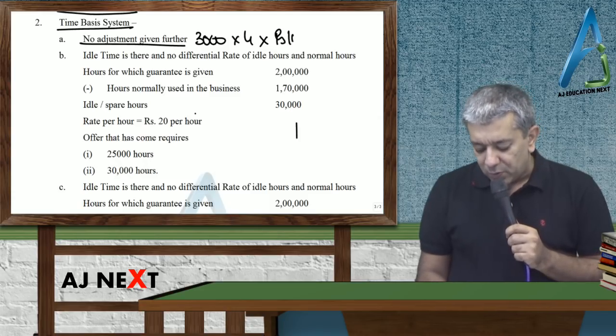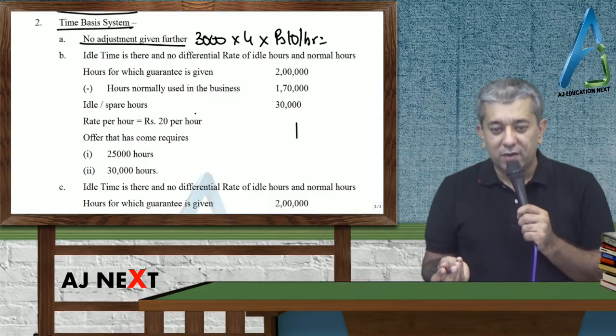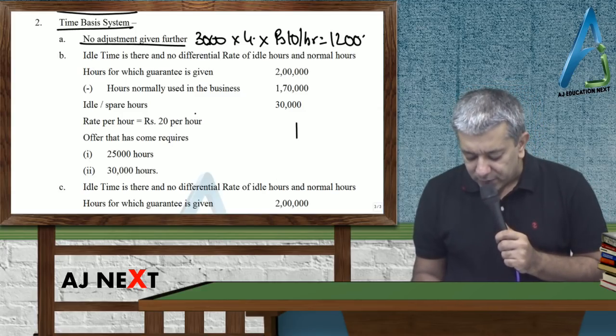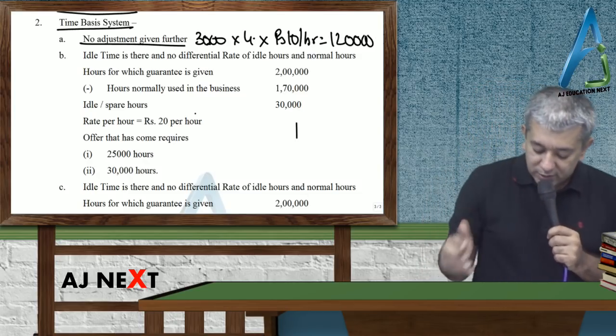For one unit, labor takes 4 hours. You told workers we will pay you 10 per hour. So your relevant cost will be how much? 3,000 × 4, 12,000 × 10, 1,20,000. Here there is nothing to think. But now there is something.